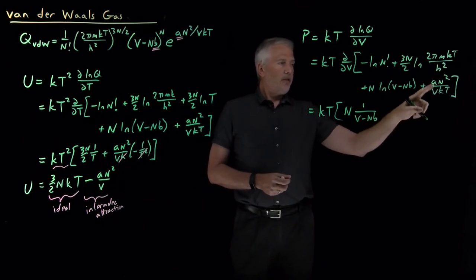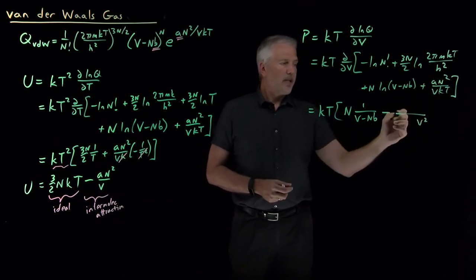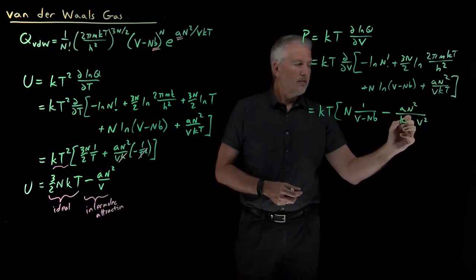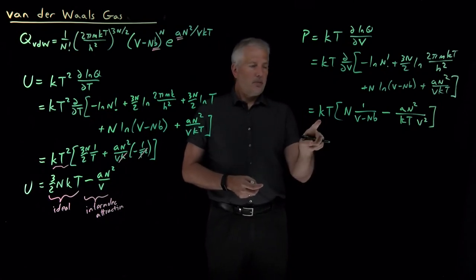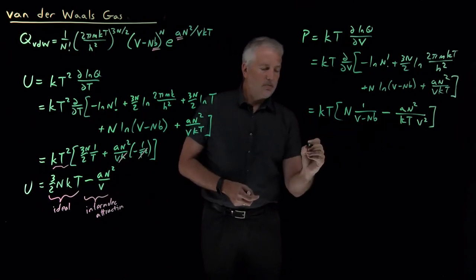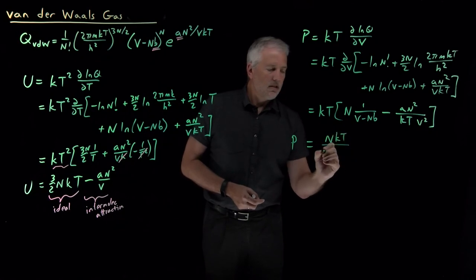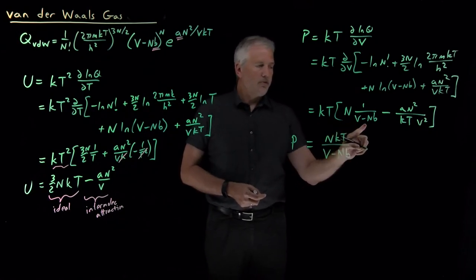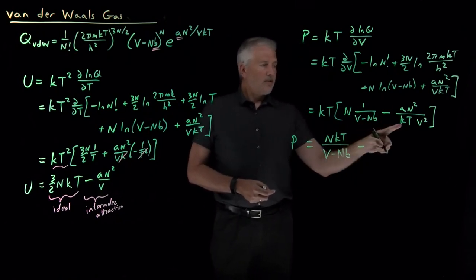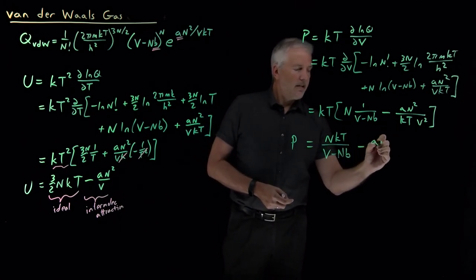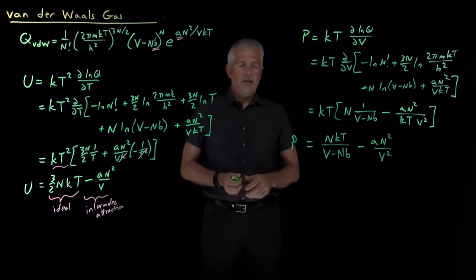The volume derivative of 1/V is negative 1/V², and we include the coefficients an² and kT. Distributing kT across both terms, we find the pressure of the van der Waals gas is NkT/(V − Nb) minus an²/V². That is the pressure of the van der Waals gas.